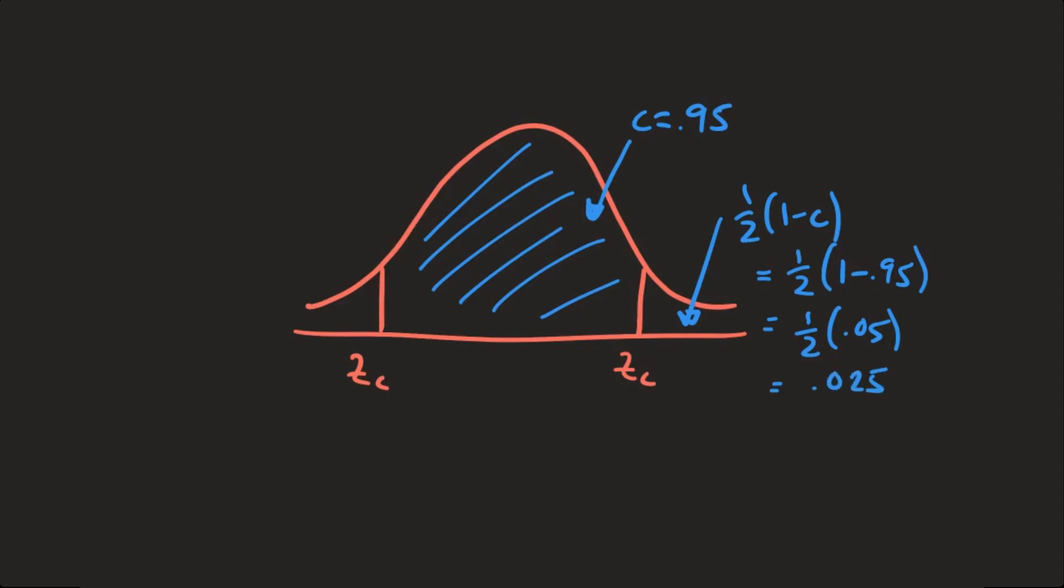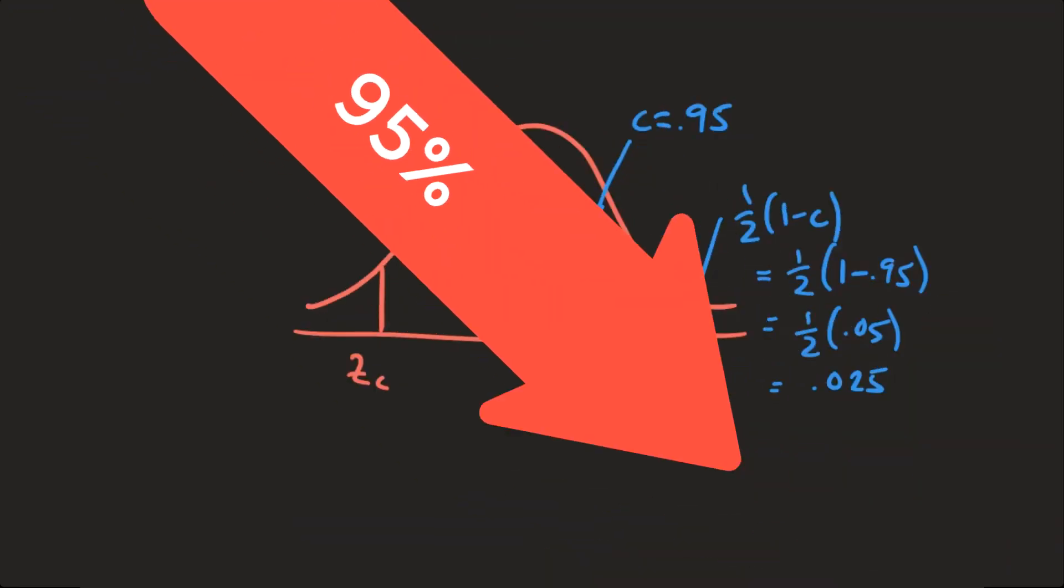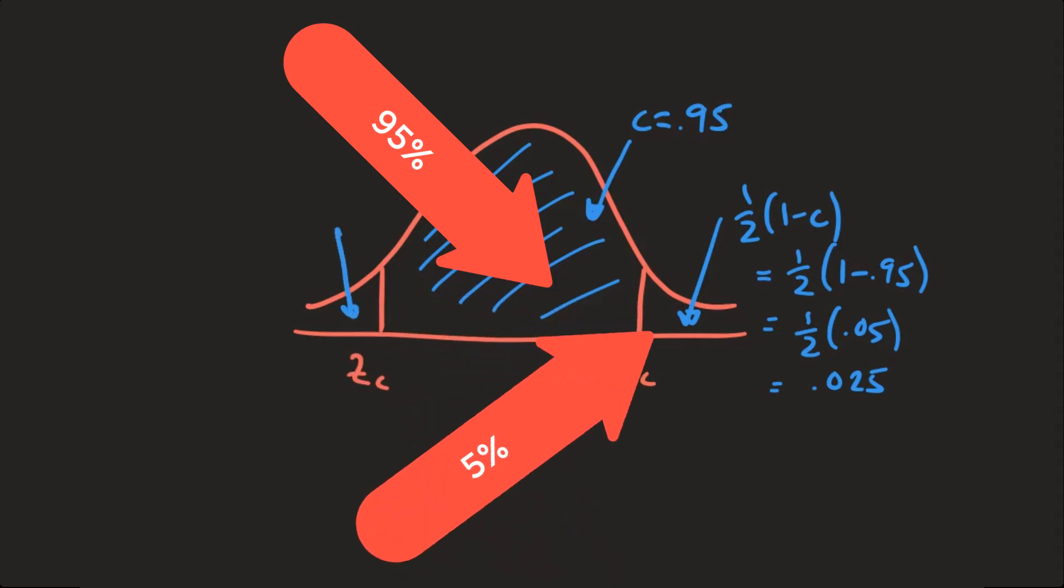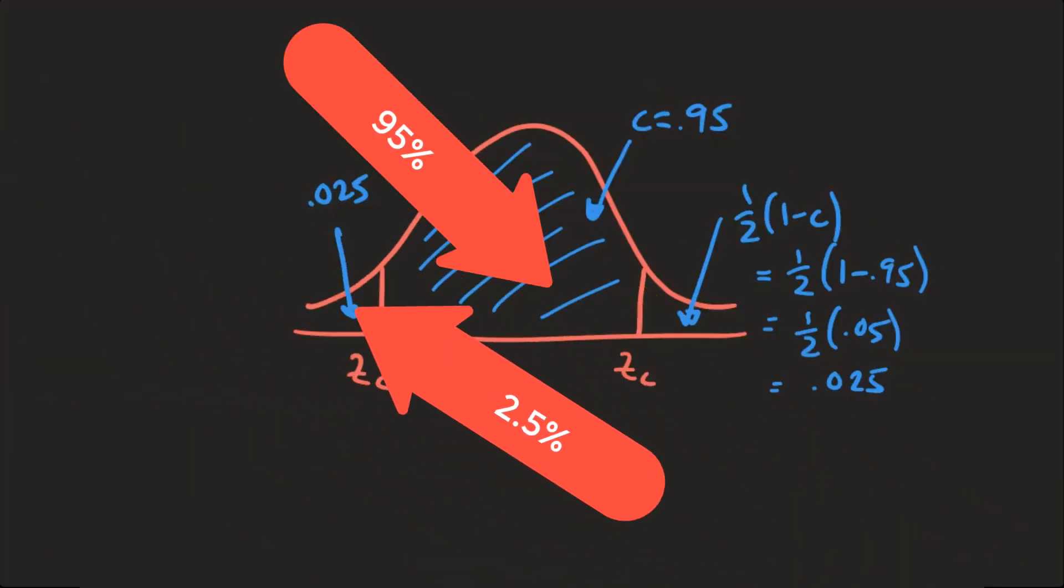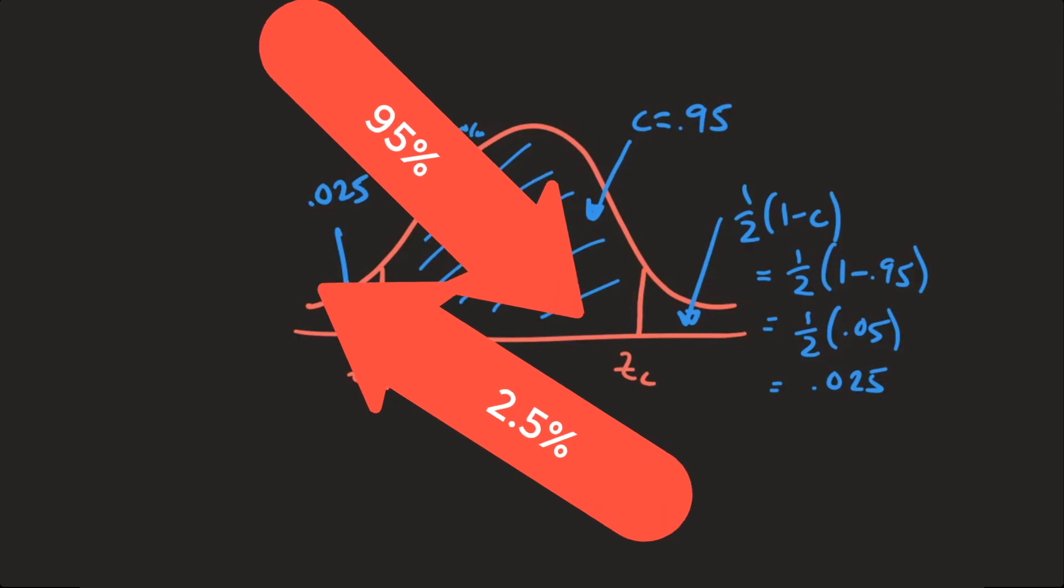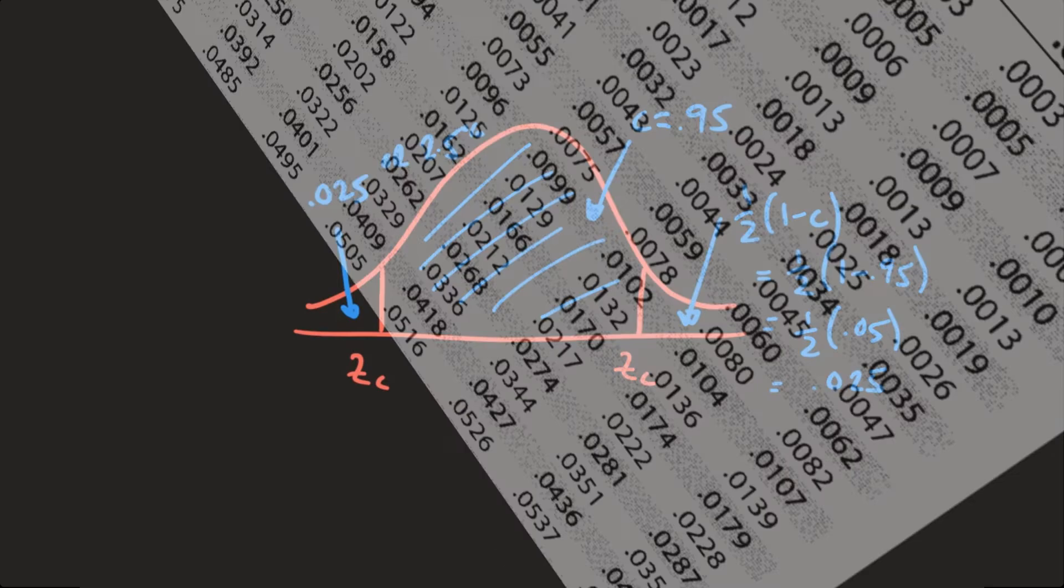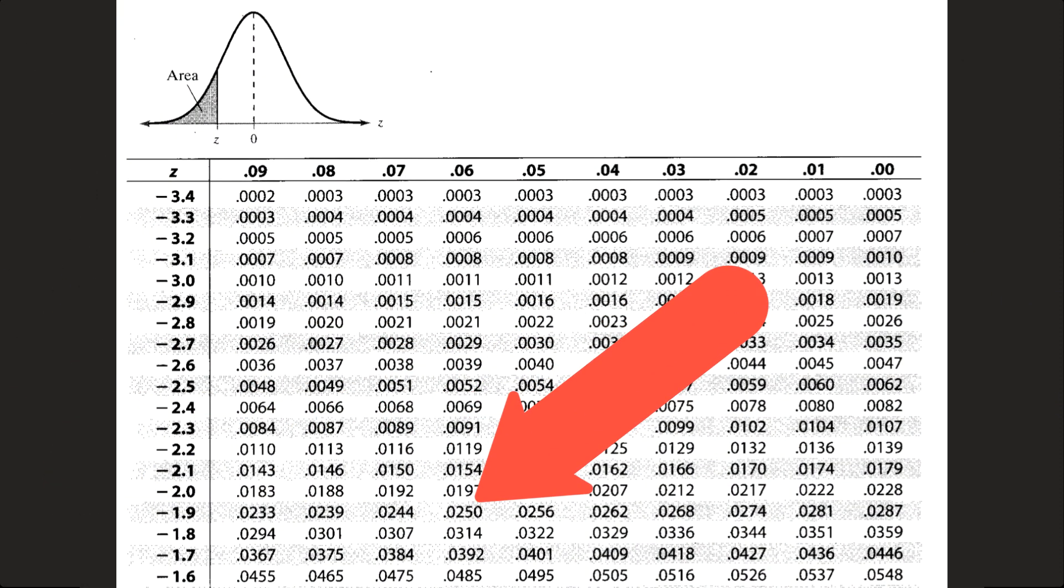But that makes sense, because if the center part is 95 percent, then these two here have to add up to 5 percent. But then when you cut that in half, that's going to give you 2.5 percent. So let's open up the normal curve and go find the area of 0.025. You can see right here, it's exactly 0.025, and that has a z value of negative 1.96.